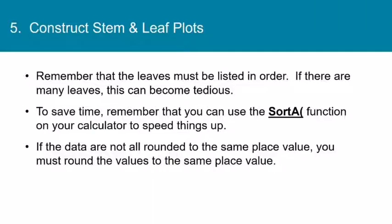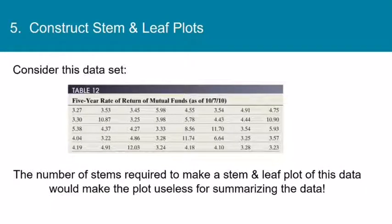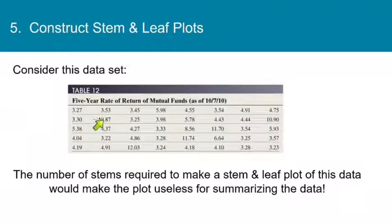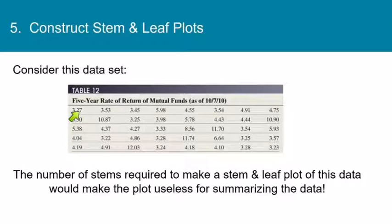Another thing to remember: if all of the data are not rounded to the same place value, you must round the values first before making the stem and leaf plot, because we need all the leaves to be in the same place value. Consider this data set — 40 numbers representing the five-year rate of return of mutual funds, all with two decimal places. Some are three-digit numbers, some four-digit, but they all have two decimal places. The smallest is 3.27 and the largest looks like 12.03.